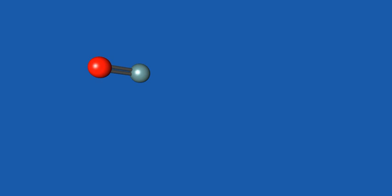Germanium monoxide, GEO, is a chemical compound of germanium and oxygen. It can be prepared as a yellow sublimate at 1000 degrees Celsius by reacting germanium oxide with germanium metal. The yellow sublimate turns brown on heating at 650 degrees Celsius.